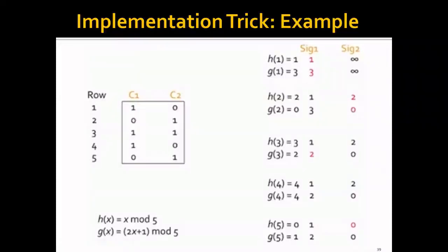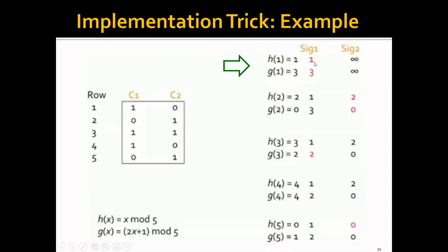For example, let's say we're given two documents represented by two columns, C1 and C2, and we have two hash functions h(x) and g(x). To use minhash to generate the signature matrix, we first check row 1 and hash the original row index 1 into values 1 and 3 using these two hash functions. We go back to check the first row of C1 and C2. Since only C1 has a 1 here, we only need to update the signature of C1. Since 1 and 3 are smaller than infinity, we update it to be 1 and 3.